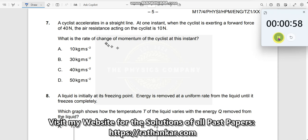Question number seven: A cyclist accelerates in a straight line. Acceleration is constant. At one instant, the cyclist is exerting a forward force of 40 newtons, and resistance acting on the cyclist is 10 newtons.